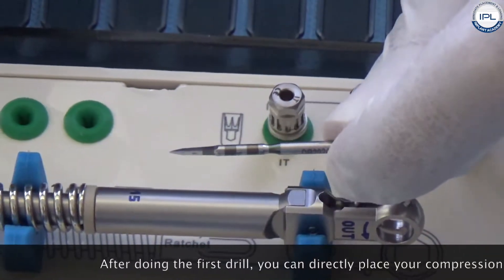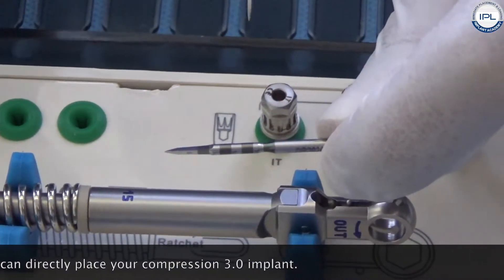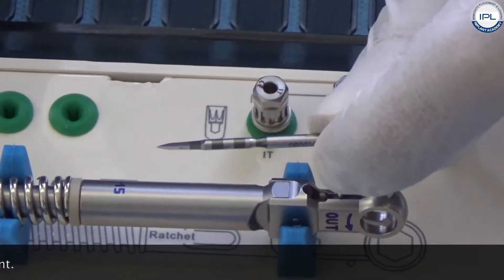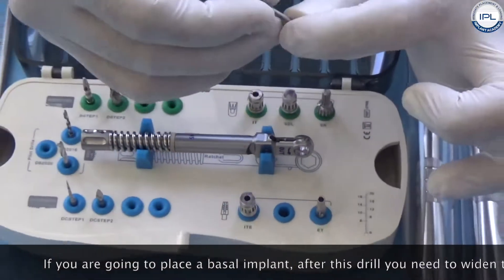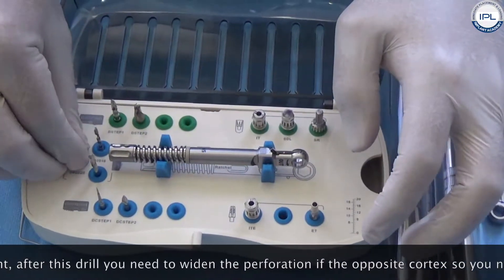After doing this drill you can directly place your compression 3.0 implant. If you are going to place a basal implant, after this drill you need to widen the perforation in the opposing cortex.